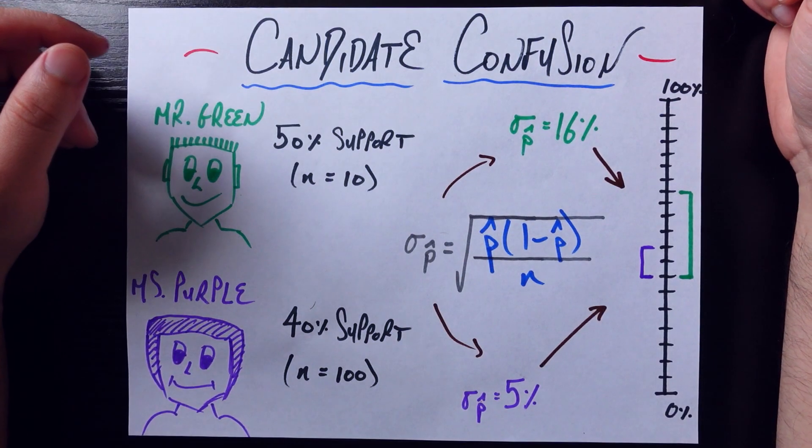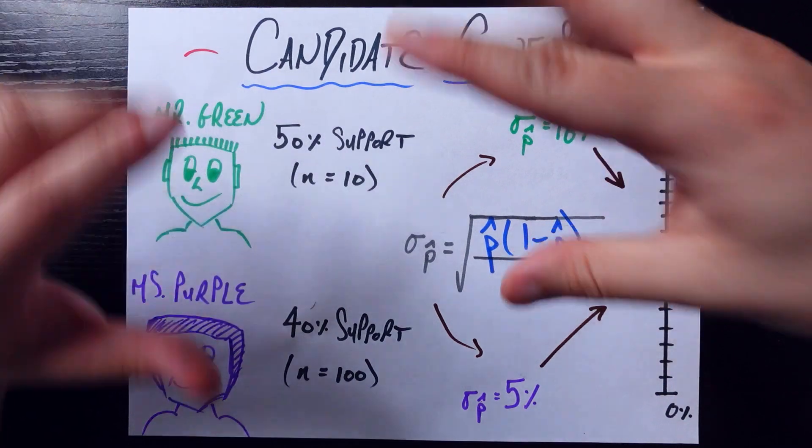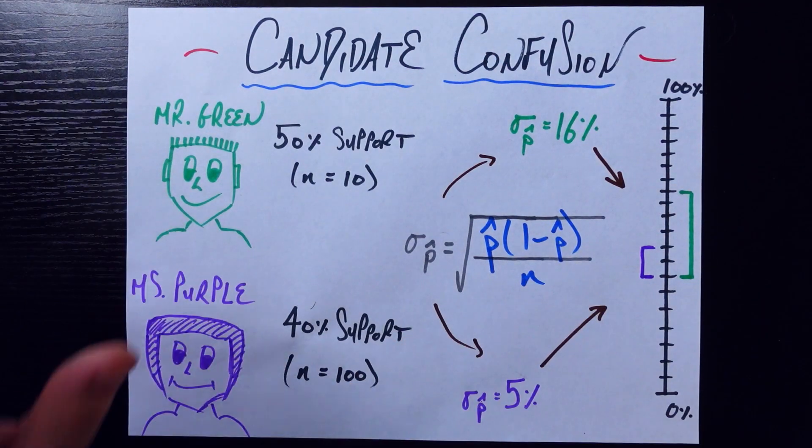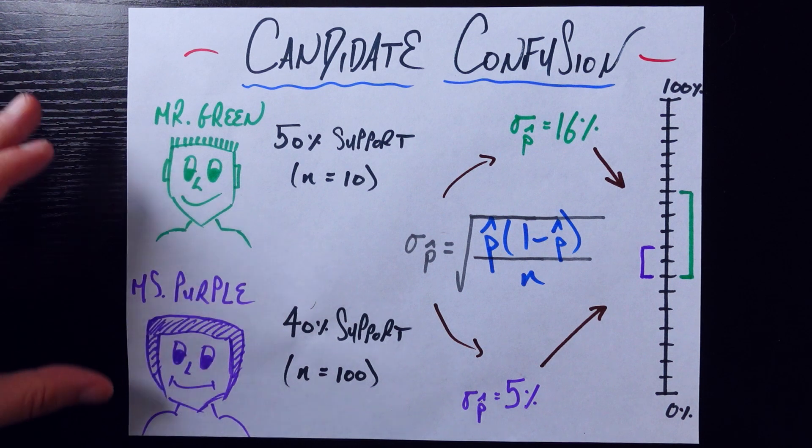Hey everyone, welcome back to another One Sheet where we try to explain a very cool math concept in three minutes or less. Today's concept is called candidate confusion, which comes from the subject matter here.